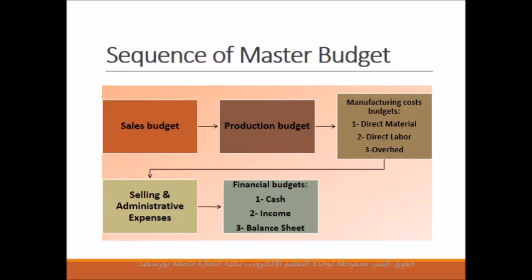Master budgets are prepared in this sequence: the sales budget is prepared first, then the production budget. Following this, individual budgets are prepared for each manufacturing cost element, including direct material, direct labour, and manufacturing overhead. Then the selling and administrative expense budget is prepared. Finally, the financial budgets are prepared, including the budgeted income statement, budgeted balance sheet, and budgeted cash flow.